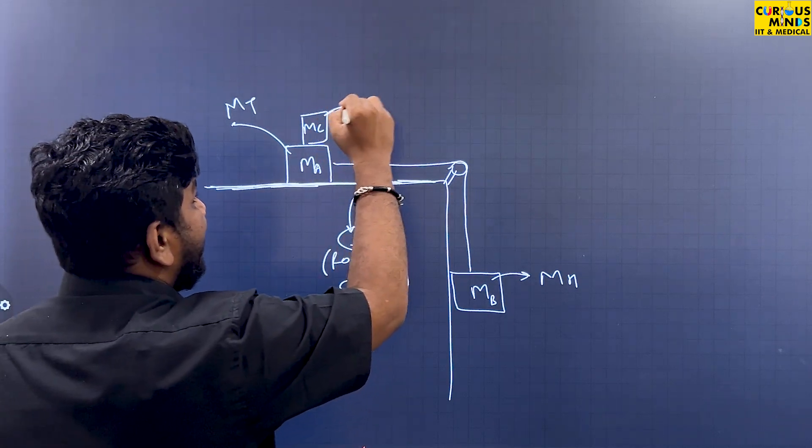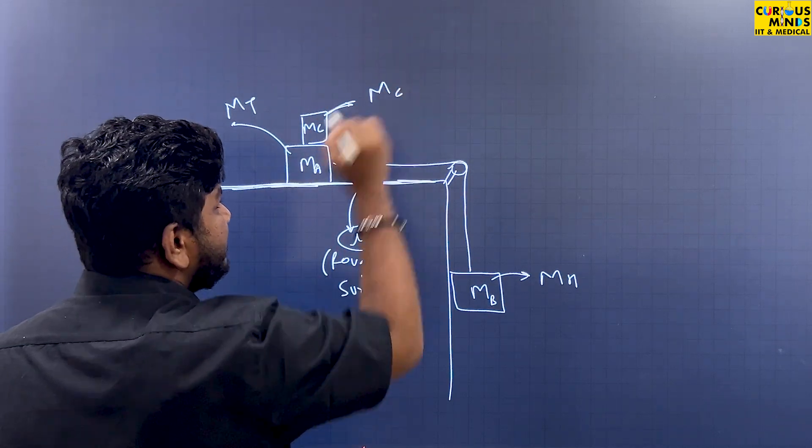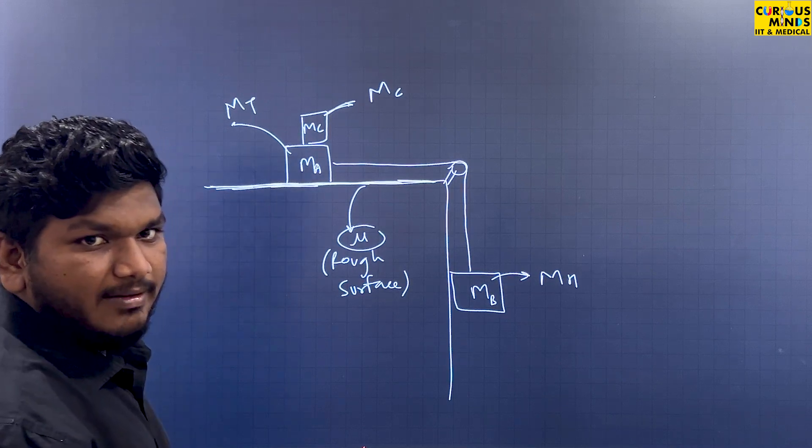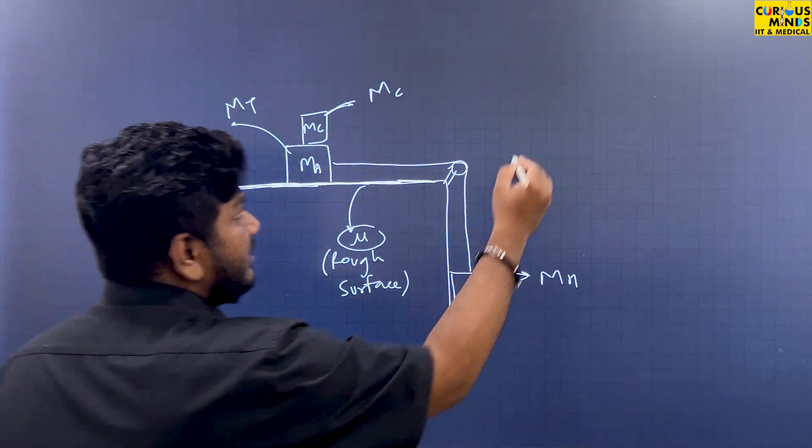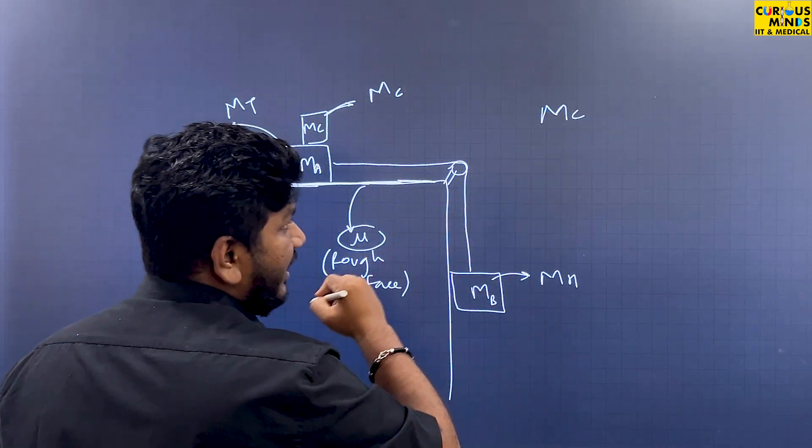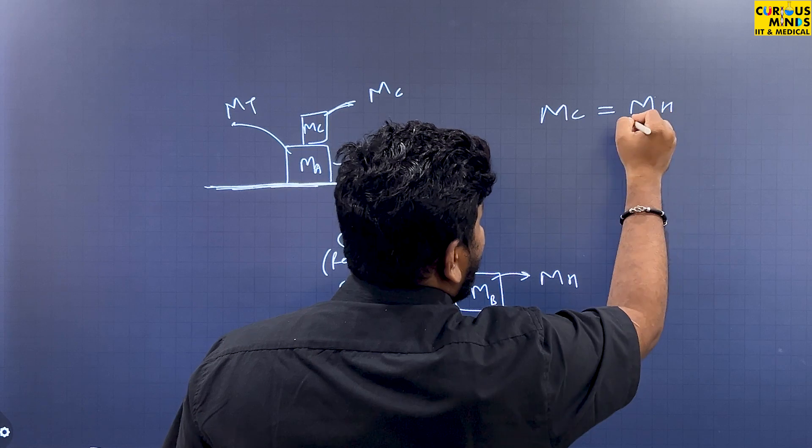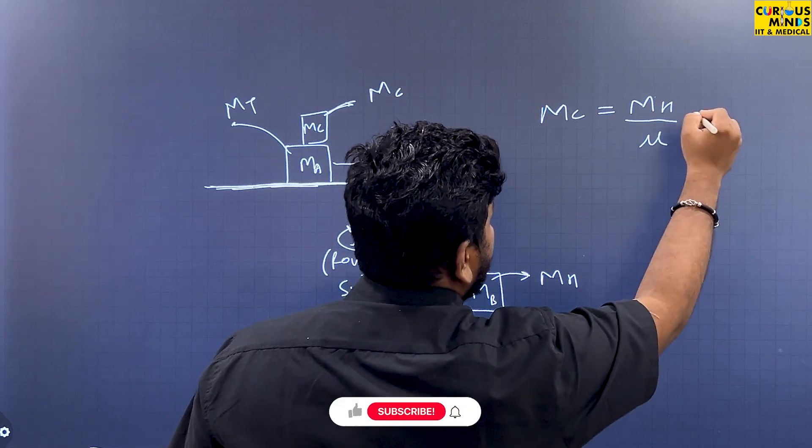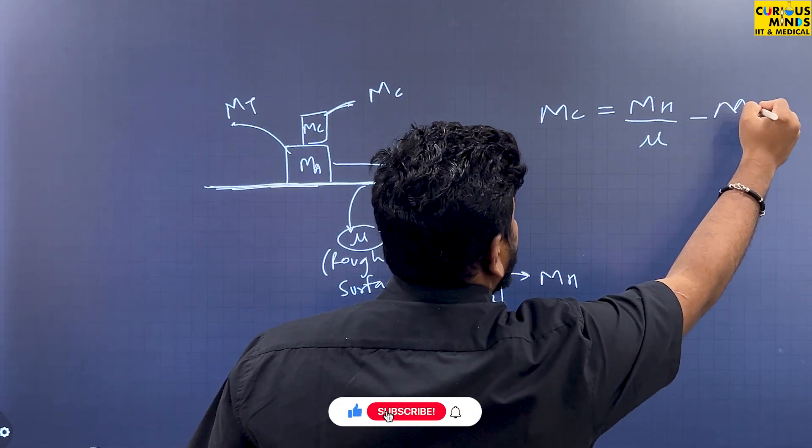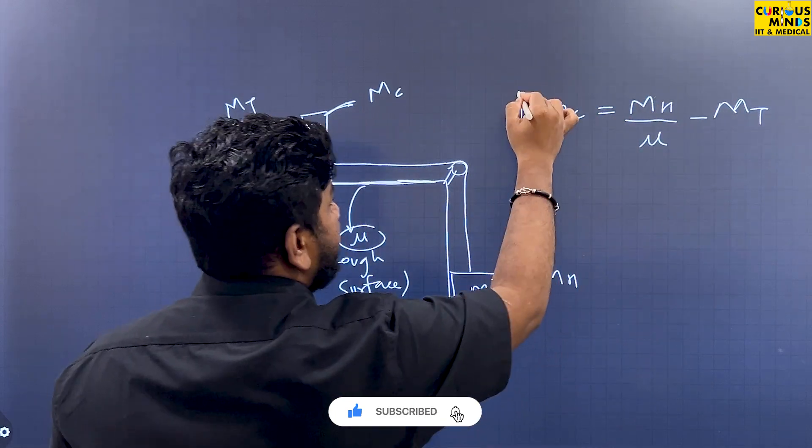And this block is named MC. Okay, so the trick is: mass of block C equals mass of the hanging block divided by mu minus mass of the table block. So you apply this formula to this type of problem, easy to do.